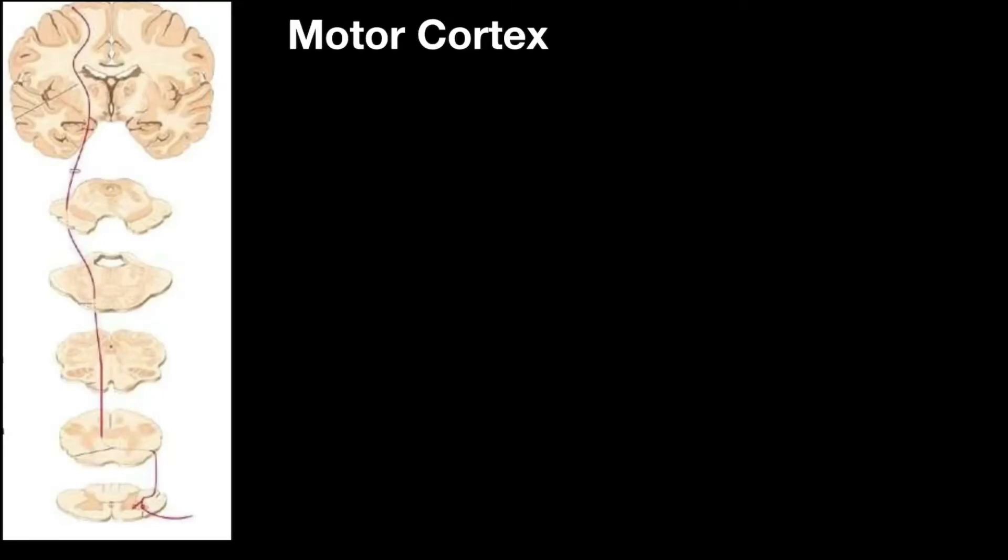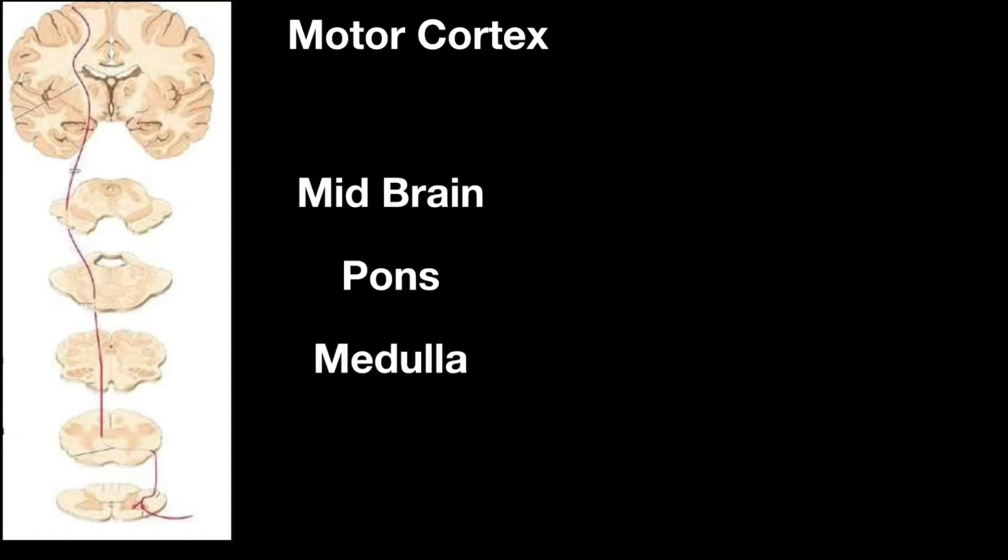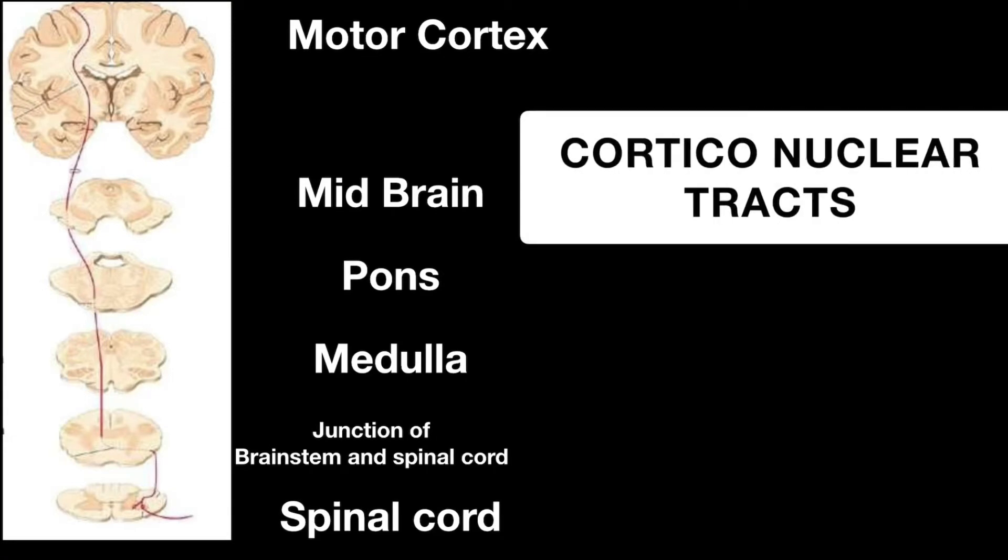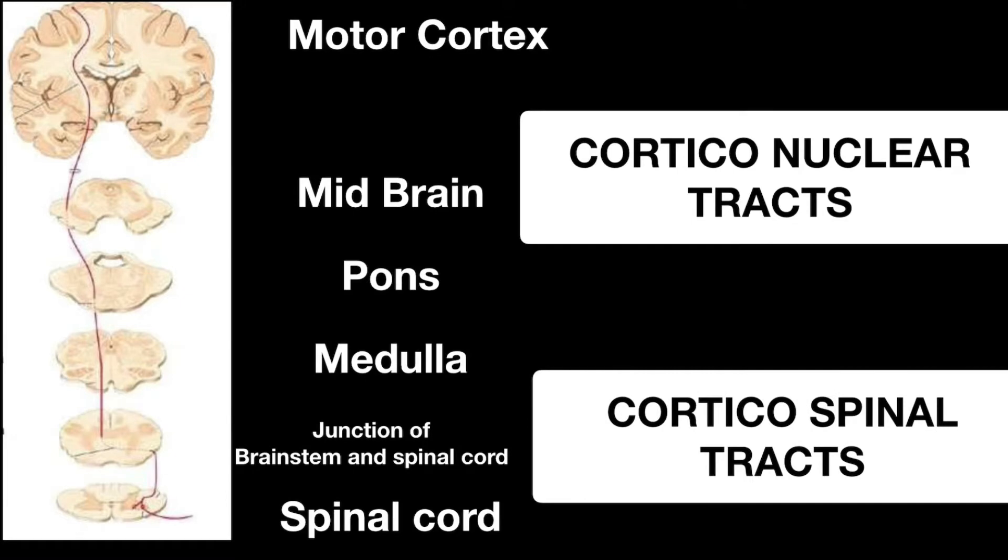Starting from the motor cortex, these tracts pass through midbrain, pons, medulla crossing at the junction of brain stem and spinal cord to finally entering into the spinal cord. These tracts are called corticonuclear or corticospinal tracts.